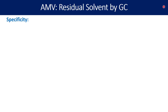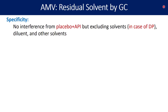It can be methanol, ethanol, hexane, or anything which is a part of your testing procedure. For interference evaluation in the case of a drug product — let's say a paracetamol tablet with ethanol as the residual solvent — you need to prepare a placebo: a mixture of all excipients plus API. It is very important that you include the API while preparing the placebo.